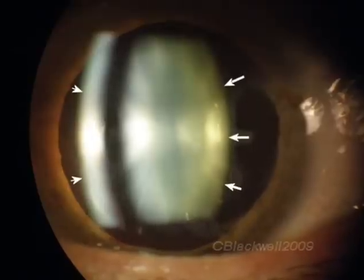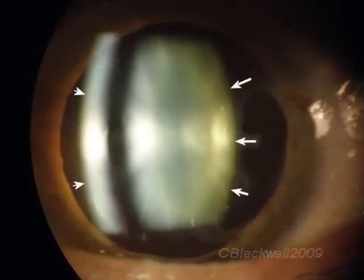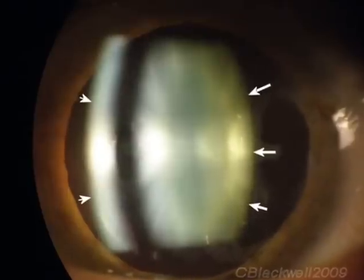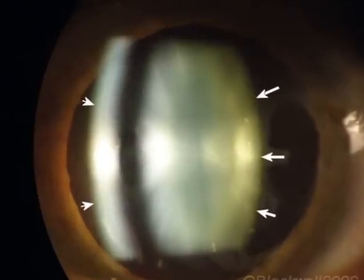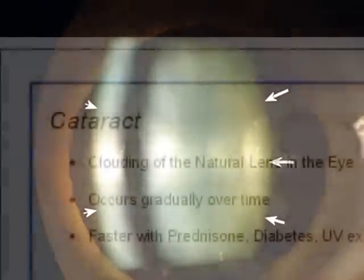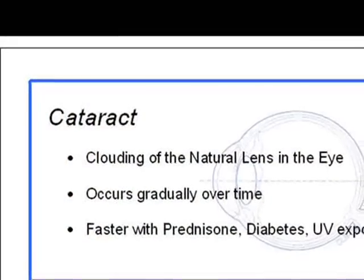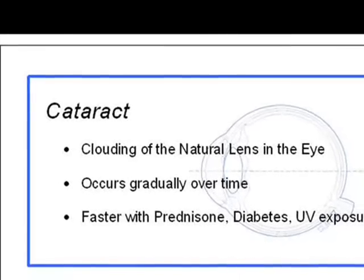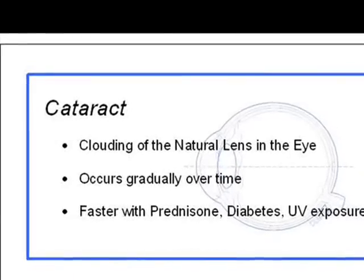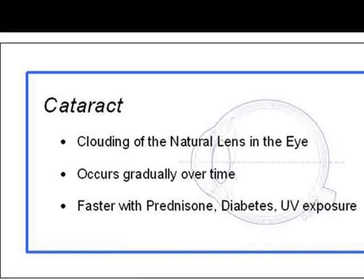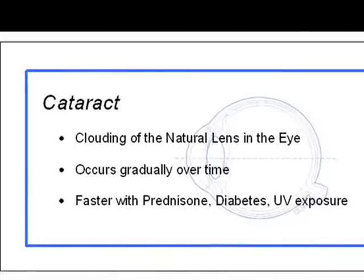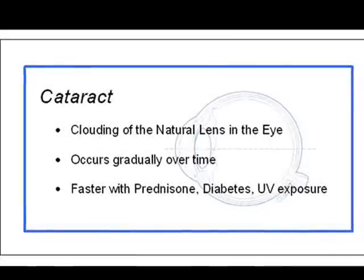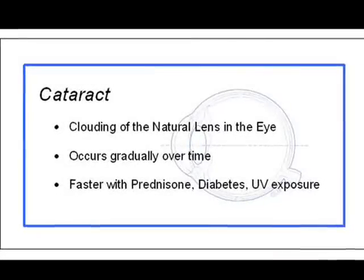In a teenager the lens would be clearer. In this lens, belonging to a person of about age 50, you can see the beginning of color change to a kind of sea green. Over time, in everyone, the lens will progressively change in color and clarity, becoming yellower, hazier, and harder to see through. When clouding in the lens interferes with vision, we call it a cataract. Development of cataract can be accelerated by a number of things, among them prednisone use, diabetes, and lifetime ultraviolet exposure.